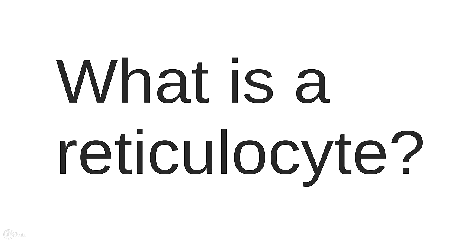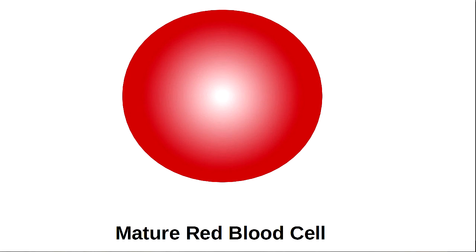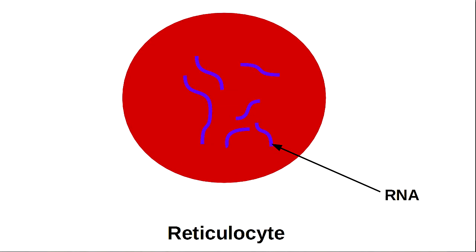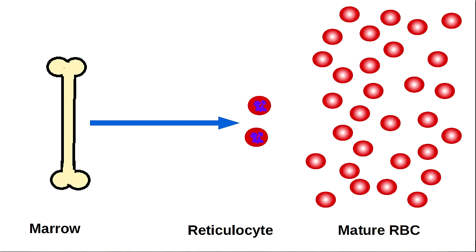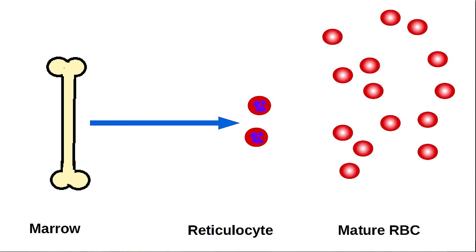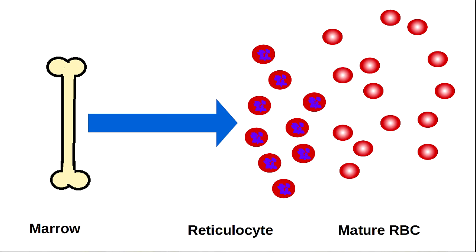The reticulocyte count is a very underused test. As you might remember, mature red blood cells don't have a nucleus. Young red blood cells, which are fresh out of the marrow, still carry around RNA for a couple of days before shedding it. These young red blood cells are called reticulocytes.